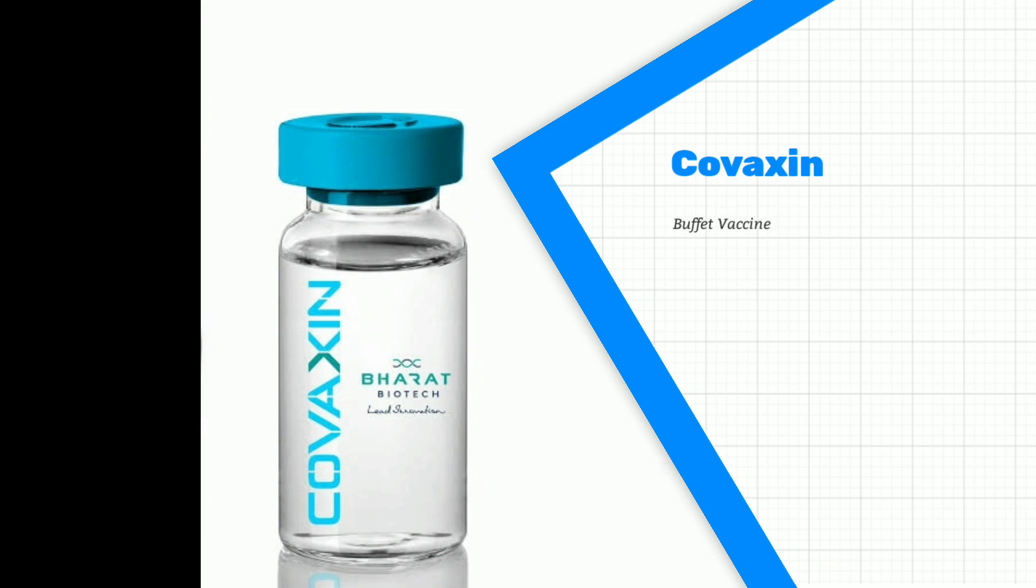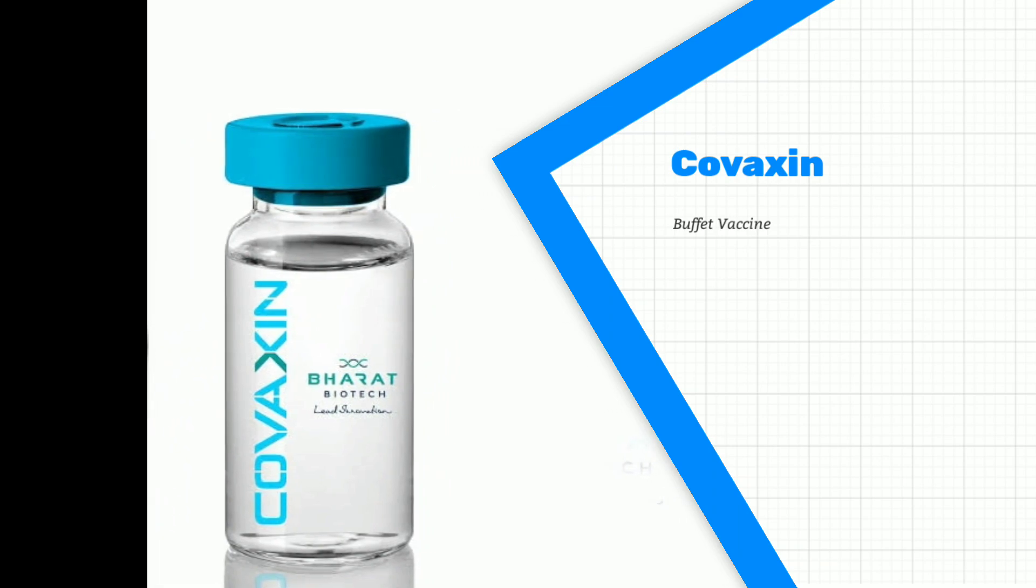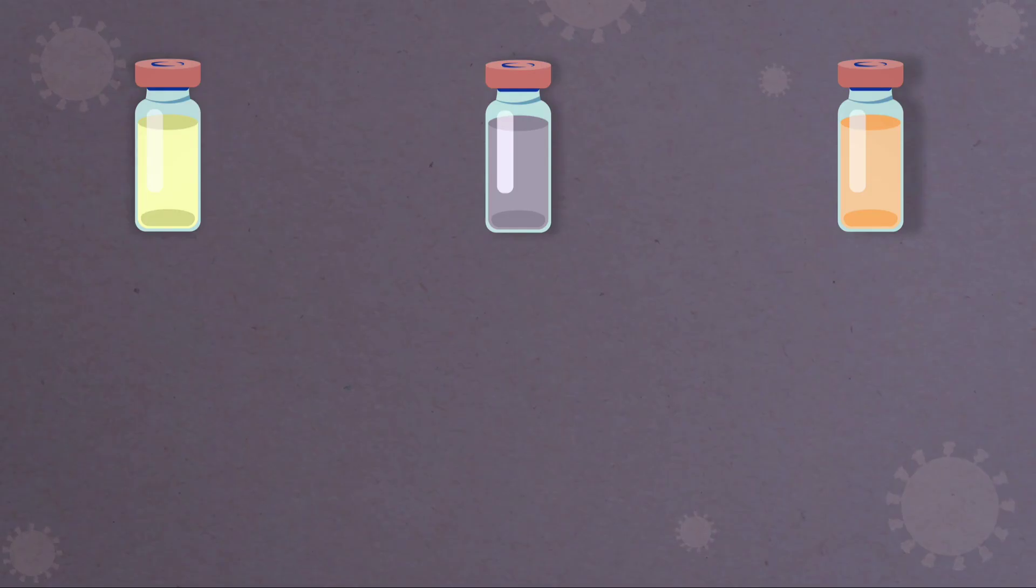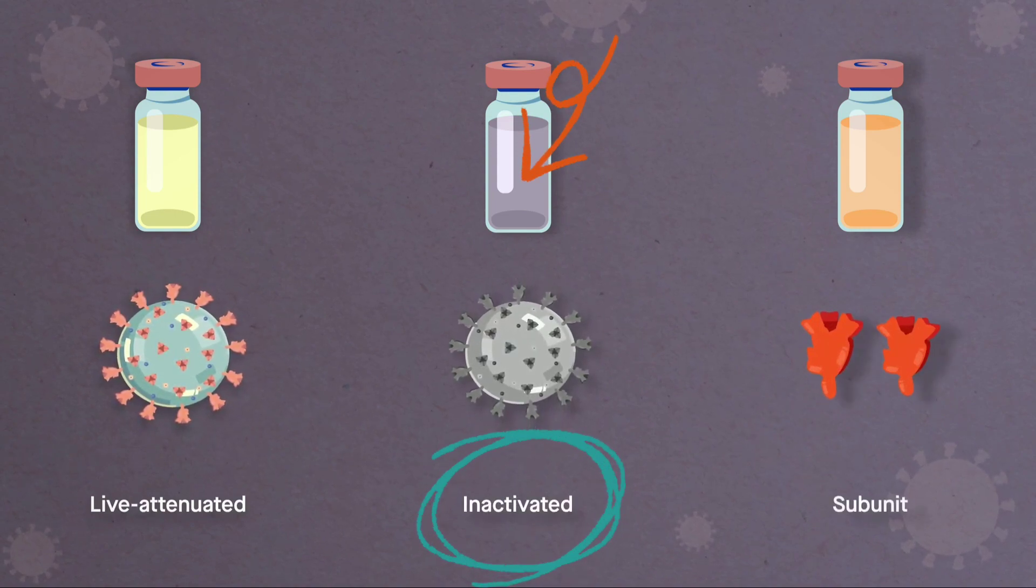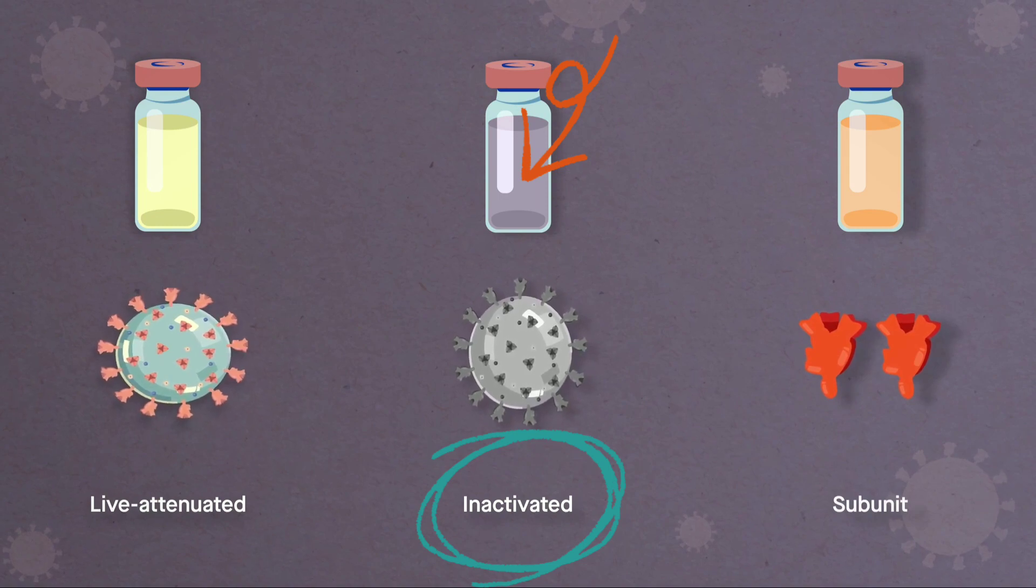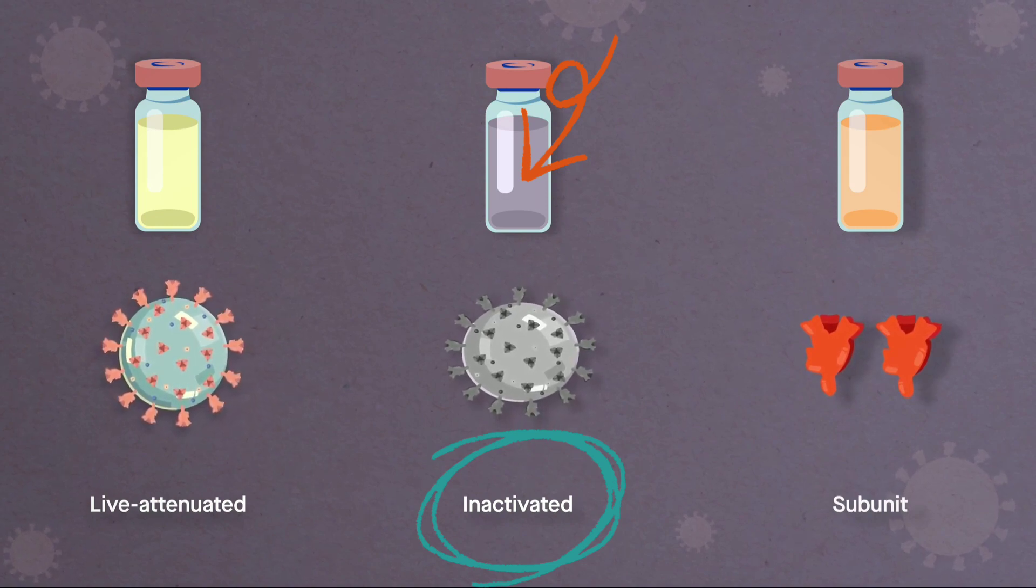But Covaxin, the buffet one, is formulated in a different way. The vaccine is a wholly inactivated virus, that is an entire dead virus, whereas other vaccines use some part of the virus, like a spike or a subunit. But Covaxin is virus as a whole.